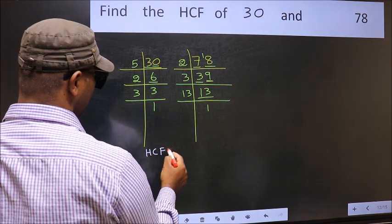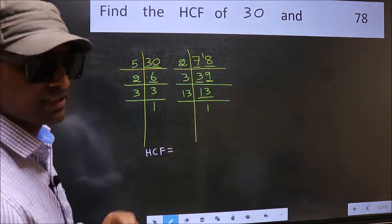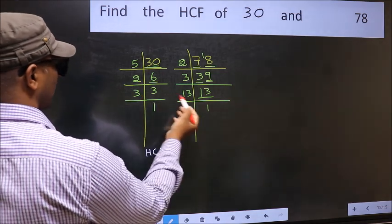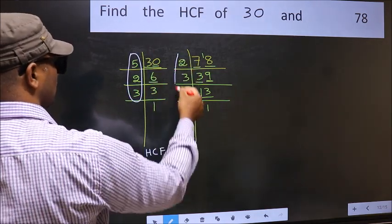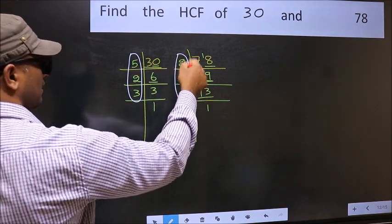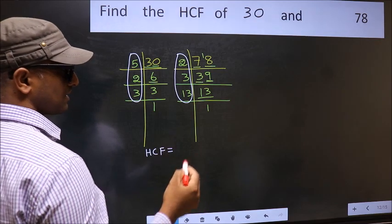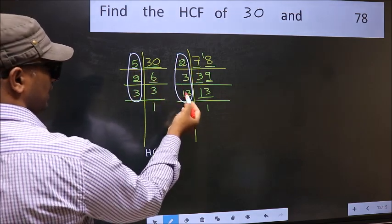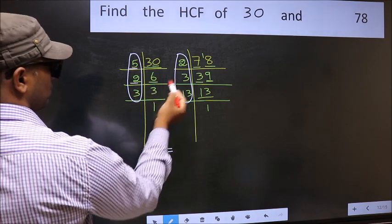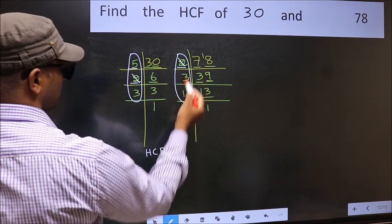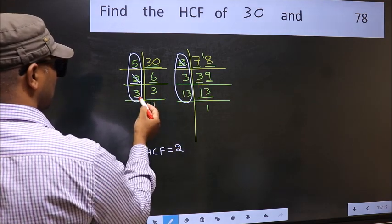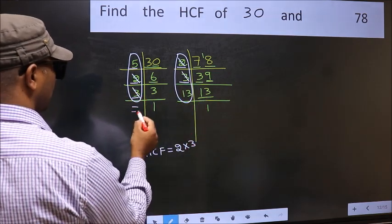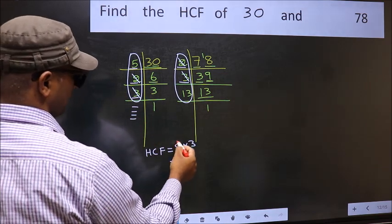Therefore, our HCF is the product of the numbers which should be present in both factorizations — that is, common to both. Starting with the number 5: do we have 5 in both? No. Next number 2: do we have 2 in both? Yes, so mark 2. Next number 3: do we have 3 in both? Yes, so mark 3. No more common numbers are left, so our HCF is 2 times 3, which equals 6.